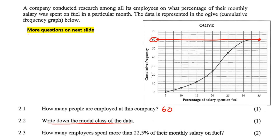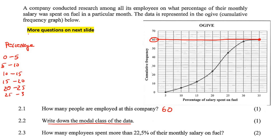Write down the modal class. Now, you've got to understand your grade 11 statistics very well to answer a question like this. You have to understand the way frequency tables work. So I'll quickly show you — I'll reverse this ogive for you. If you were given a frequency table, it would have percentage on fuel with intervals: 0 to 5, 5 to 10, 10 to 15, 15 to 20, 20 to 25, 25 to 30, and 30 to 35, then a frequency column and a cumulative column.